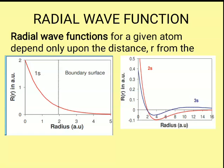In case of 2s, the graph is a little bit different. As the distance is less, the radial wave function is maximum. As the distance starts increasing, the radial wave function starts decreasing. But a stage comes when it crosses zero — meaning from a positive wave function it becomes a negative wave function. That point is called a node. A node is simply the region where the probability of finding an electron is zero. It is the point where the graph passes from positive towards the negative wave function.